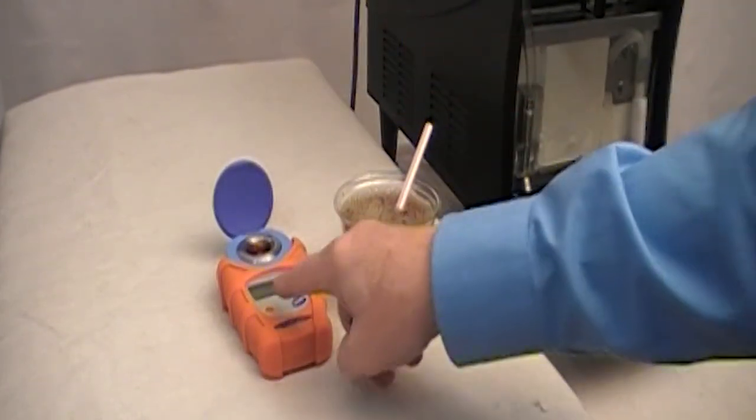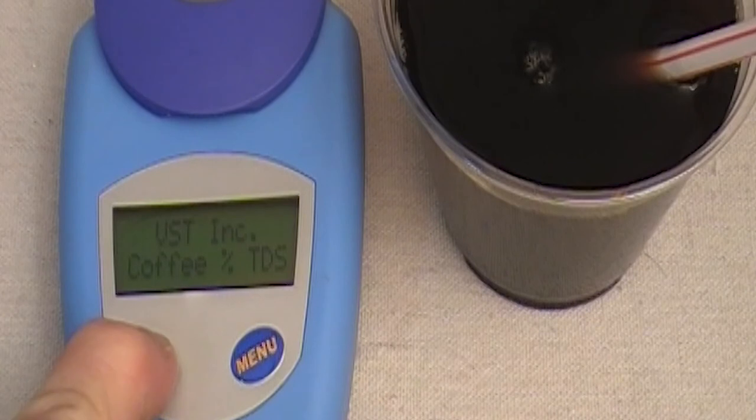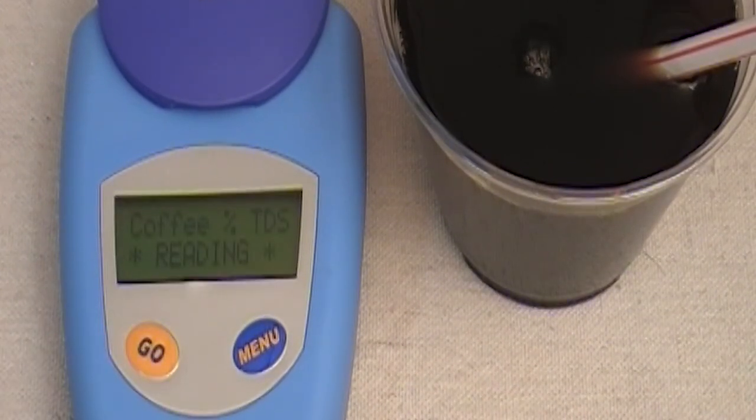Press the button and take the TDS reading. Although different blends of coffee will have different TDS readings, an average reading of 1.5 is average.